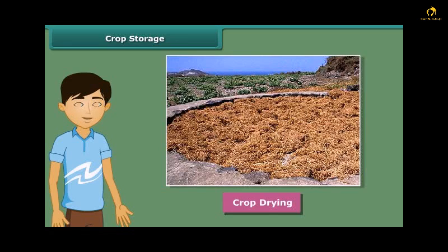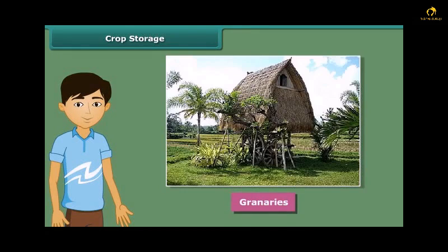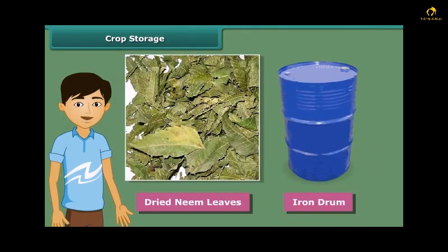Grains should be properly dried in the sun to reduce moisture. Farmers store grains in jute bags or metallic bins, but for large-scale storage, they use silos and granaries. People also keep dried neem leaves in an iron drum for storing food grains, as these dried neem leaves protect the grains from pests and microorganisms.